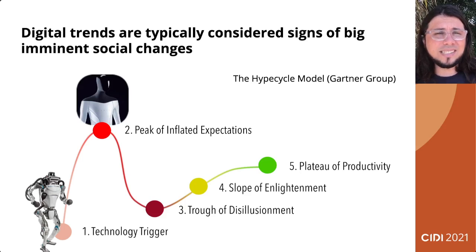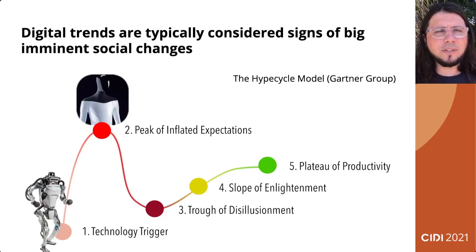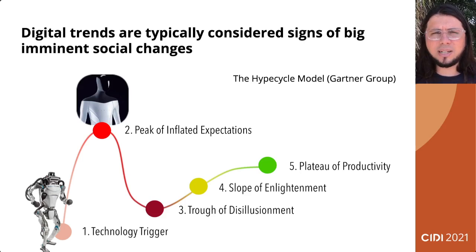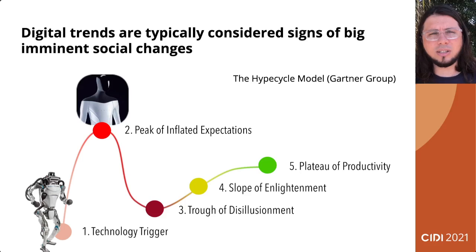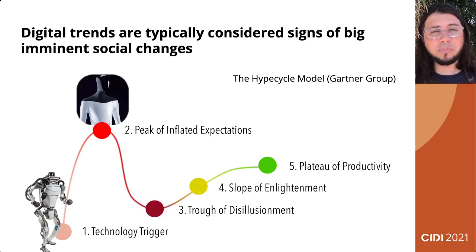Then society starts to play out with that possibility, trying different things — the peak of inflated expectations. It's all about playing out different ways of using that technology. I bring here just an example of humanoid robots that may replace human workers.